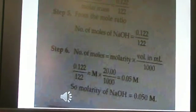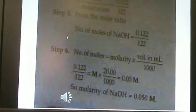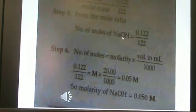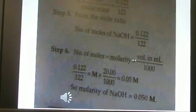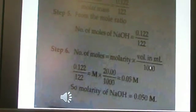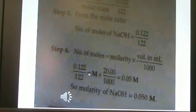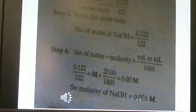The number of moles of benzoic acid is mass by molar mass, 0.122 by 122. From the mole ratio, you get the number of moles of NaOH equals 0.122 by 122. Number of moles equals molarity multiplied by volume in milliliters divided by 1000. So 0.122 by 122 equals M multiplied by 20 by 1000. You get 0.05 M. So the NaOH molarity equals 0.05 M.